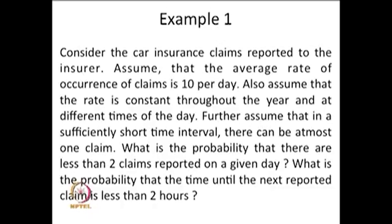We started with this problem of car insurance claims reported. The claims are events occurring over time. If we make the assumption that in a sufficiently small interval of time at most one claim can happen and the average rate of occurrence is constant throughout the time, then we can think of a sort of arrival process — a pure birth process satisfying some conditions — that may lead into the Poisson process.